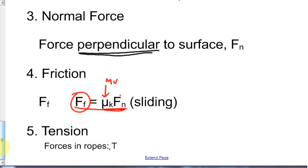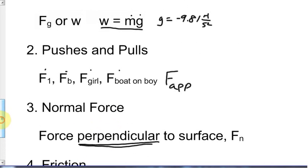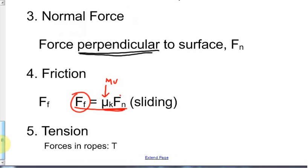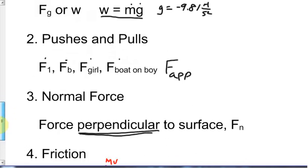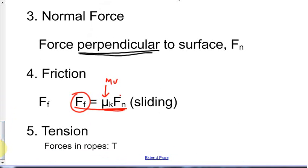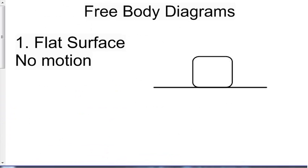Lastly, tensions are abbreviated as T. We talked about pushes and pulls above, but you can only have pulls in ropes — you can't push a rope, it just gets slack. So we abbreviate forces in ropes as T for tension. Now that you have some idea of these abbreviations, we can look at some particular motions in free body diagrams.